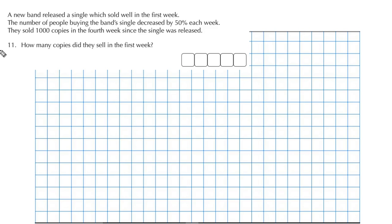Okay, so where is our key information? That's what we need to pull out of this and try to think about what's going on. Now we have this: the number of people buying the band's single decreased by 50% each week. Now what's 50%? Well, remember, percent means per 100.